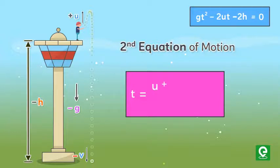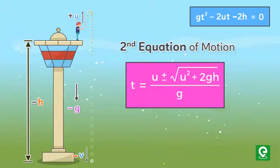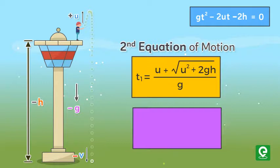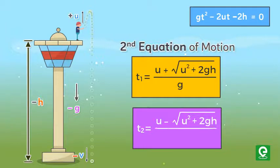From quadratic formula we can find the value of t, that is t equal to u plus minus square root of u square plus 2gh whole divided by g. Or we can write t1 equal to u plus square root of u square plus 2gh whole divided by g, and t2 equal to u minus square root u square plus 2gh whole divided by g. Neglecting t2 value because time can't be negative.